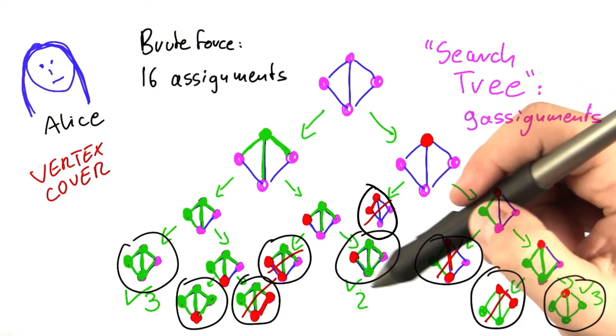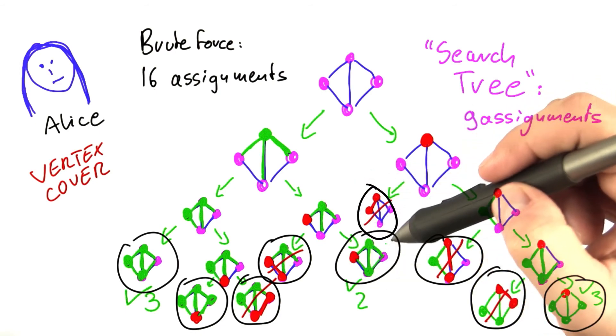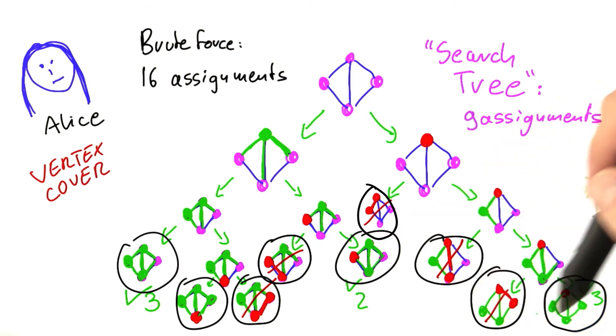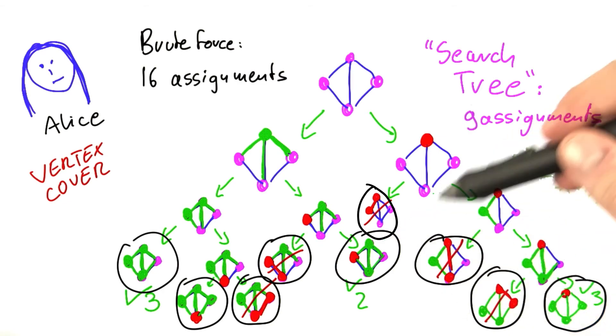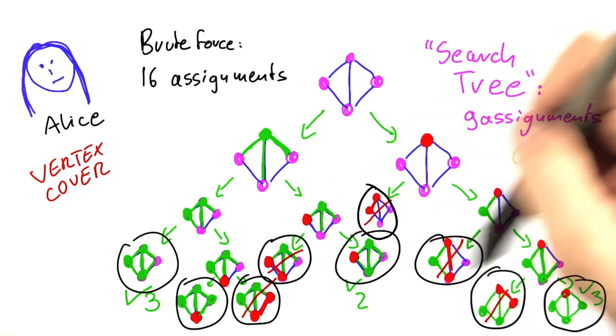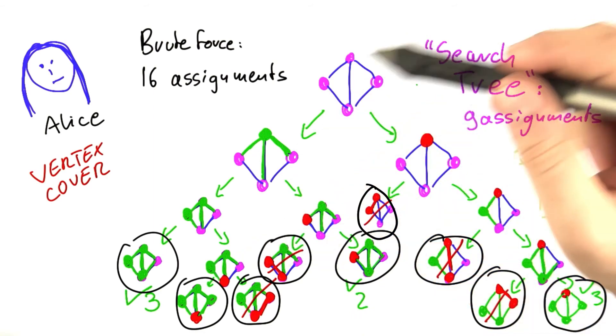And you also notice that there could be certain other techniques that we can use for speedups. For example, here, we had already found a solution of size two, so we probably could have even stopped our algorithm a little bit earlier over here. But we're going to get into this—the main thing that I would like you to understand is the technique of the search tree.